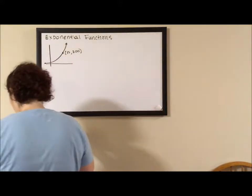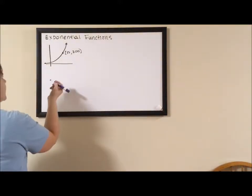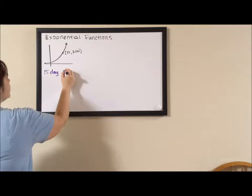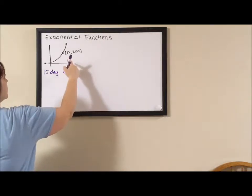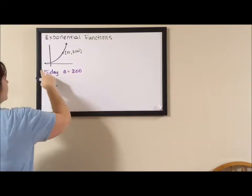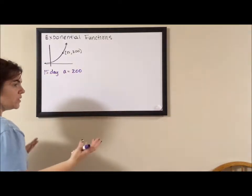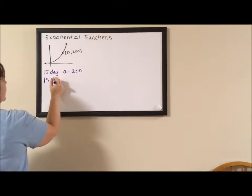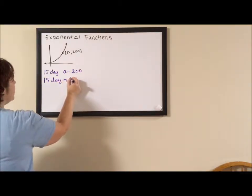So what we're going to do is first say that the 15-day growth rate is 200, because how you get from 1 to 200 with multiplication is multiply by 200. But we want to go from 15 days down to 1 day.